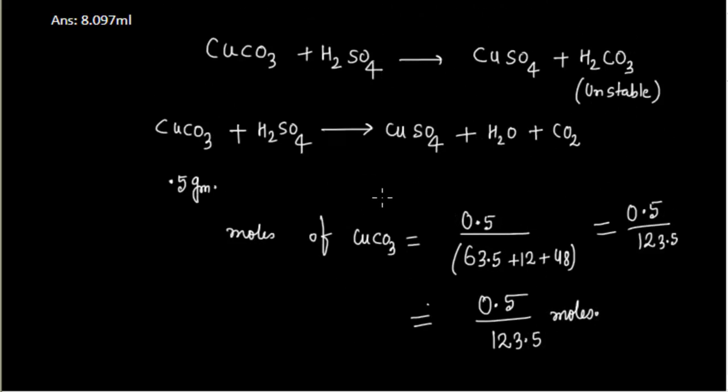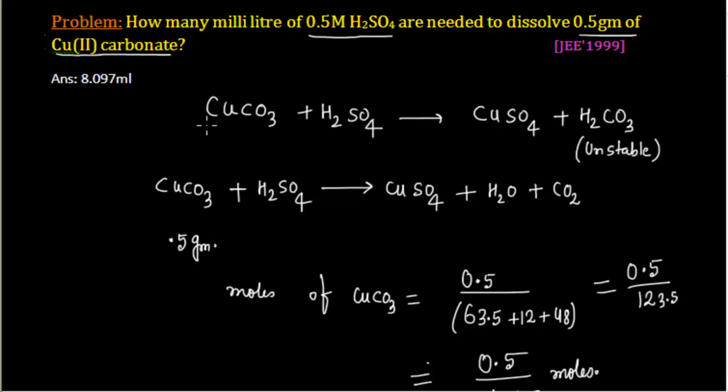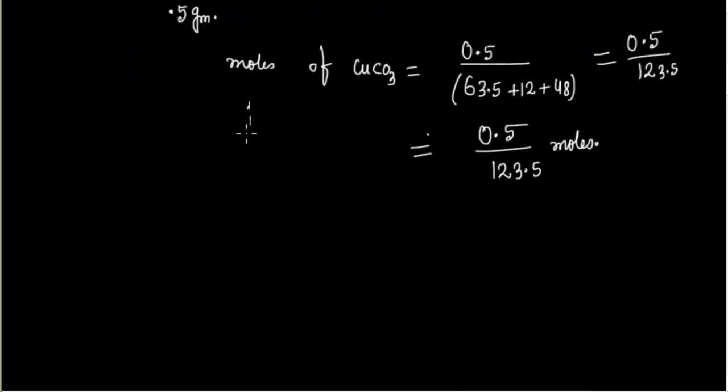Once we know moles of CuCO3, we can calculate moles of H2SO4. One mole of CuCO3 reacts with one mole of H2SO4. This means moles of CuCO3 equals moles of H2SO4, which is 0.5 divided by 123.5.